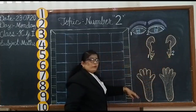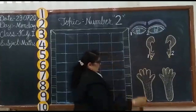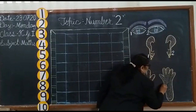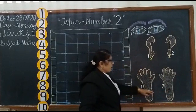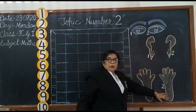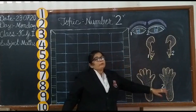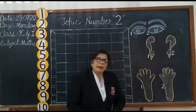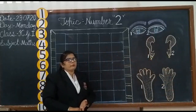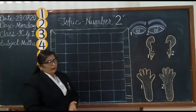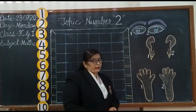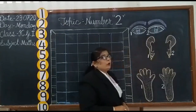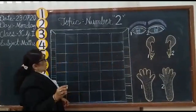Now we will count the hands picture. 1 and 2. So here are 2 hands pictures. We will count like this. Now I am coming to writing work. I will start writing work with some strokes. Look at the blackboard. How to write 2.